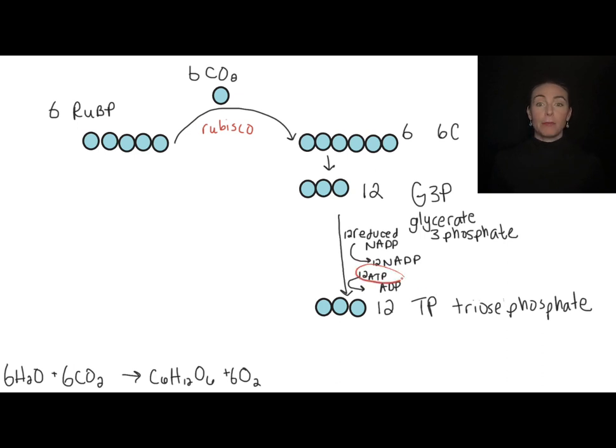We're going to use that energy by breaking the third phosphate group off of ATP to further energize these G3Ps. So I've got to spend twelve ATPs. That means I'm going to end up with ADPs. And that also means that this TP is a much more high energy compound than the G3Ps. Where did this come from? Remember these reduced NADPs and these ATPs are what we made in the light dependent reactions.